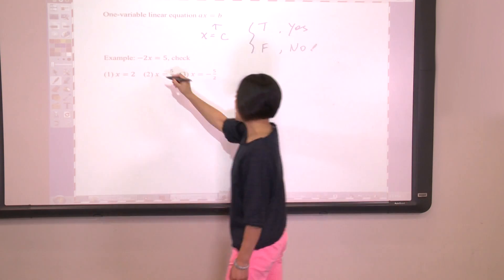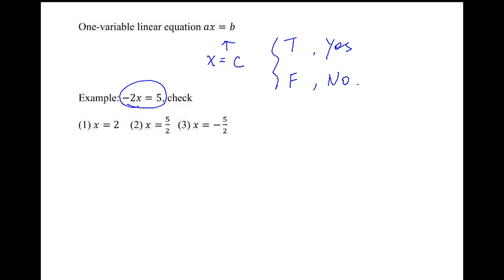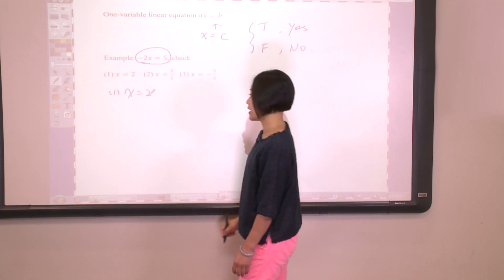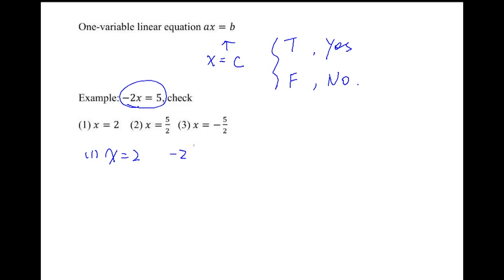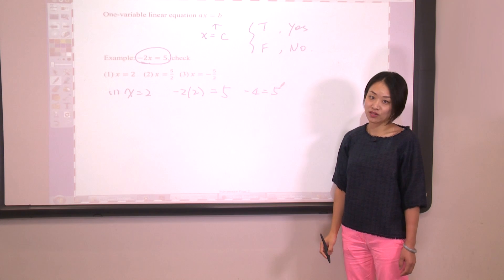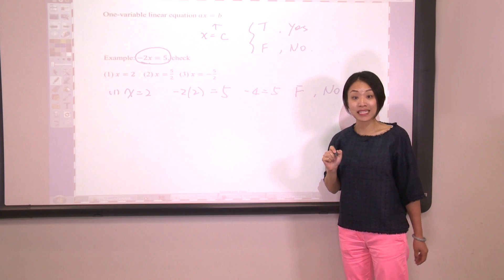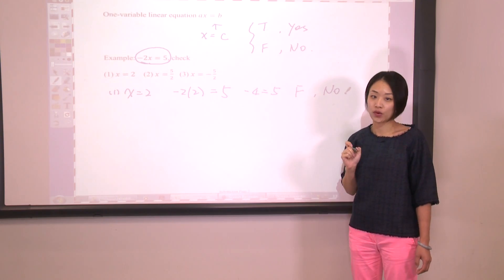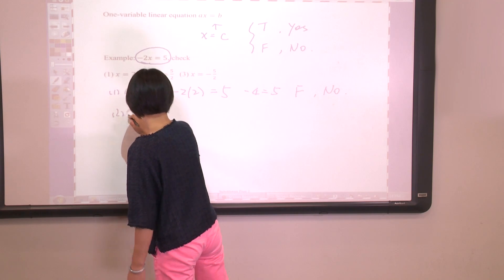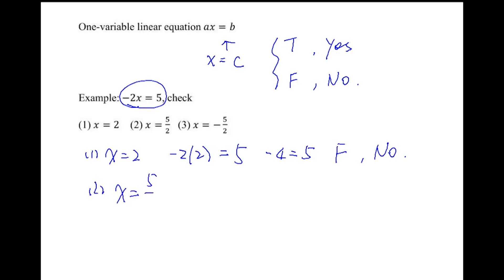Let's try this example: negative 2x equals 5. Starting with the first one, x equals 2. Plugging in, the left-hand side equals negative 2 times 2, which equals negative 4. The right-hand side is 5. Apparently it's a false statement, so the answer is no — x equals 2 is not a solution of this equation.